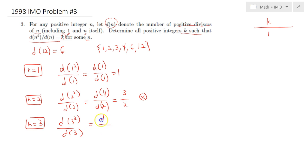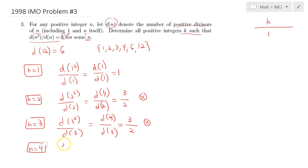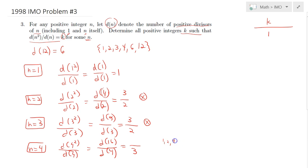For n = 4, d(16)/d(4) = 5/3, which again is not an integer. For n = 5, d(25)/d(5) = 3/2, not an integer either. So testing small values isn't the right way to proceed — we need to generalize.